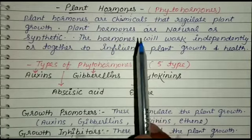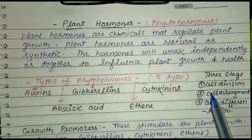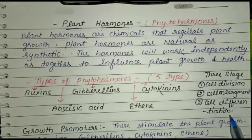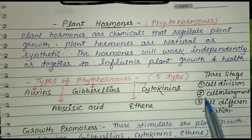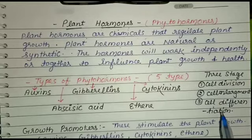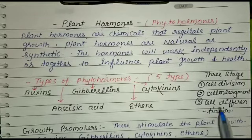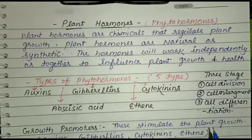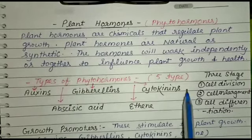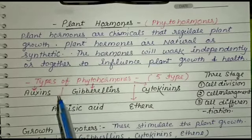Plant hormones are also known as plant growth substances. The growth of the plant can be divided into three stages: cell division, cell enlargement, and cell differentiation or cell specialization. These three stages as well as promotion of dormancy, breaking of dormancy, stomata control, falling of leaves, fruit growth, ripening of fruits, and aging in plants are all controlled by various plant hormones.